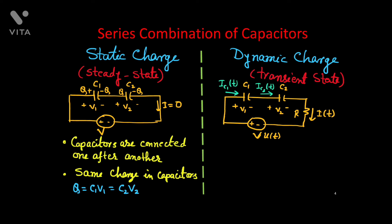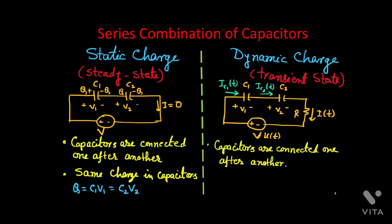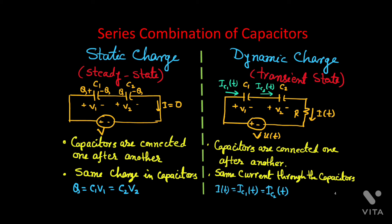For dynamic charge, currents IC1 and IC2 are present and the capacitors are connected one after another. In this case these two currents should be the same — same current flows through both capacitors, which is the same convention as for series resistances. So I(t) = IC1(t) = IC2(t) because it is a single loop.